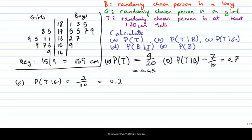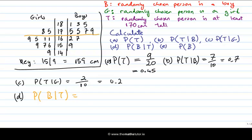For part D, we turn things around: we want P(B|T) — the probability that the randomly chosen person is a boy given that they're more than 170 tall. We restrict to the data above the 170 line and count how many are boys: one, two, three, four, five, six, seven. The total above the line is nine, so P(B|T) = seven over nine.